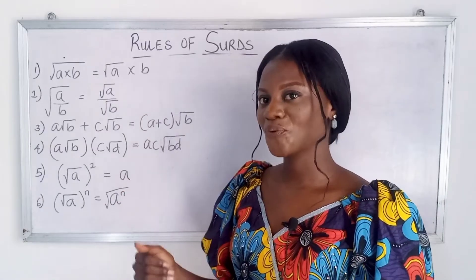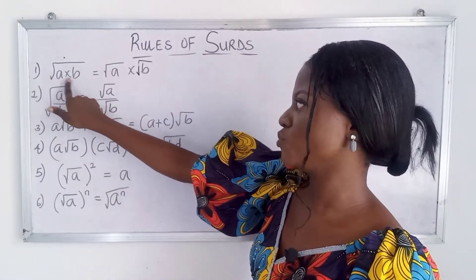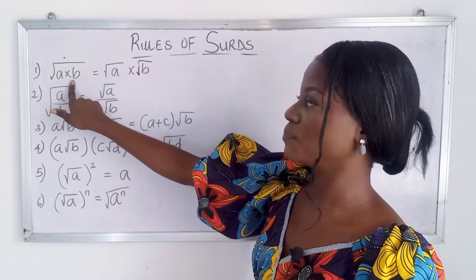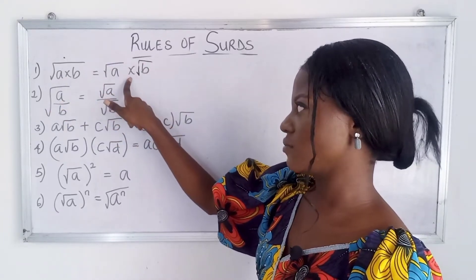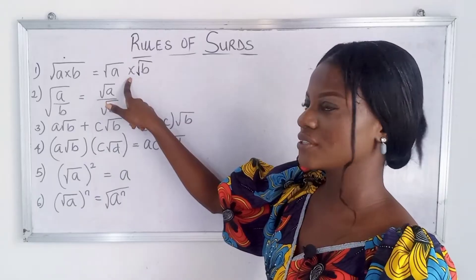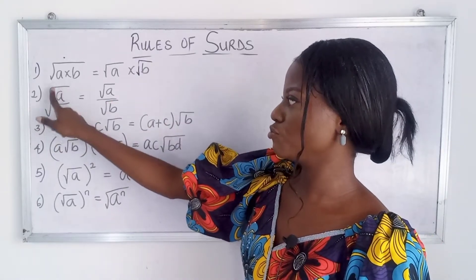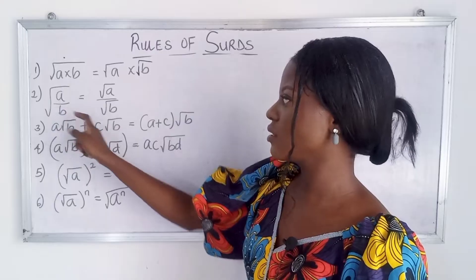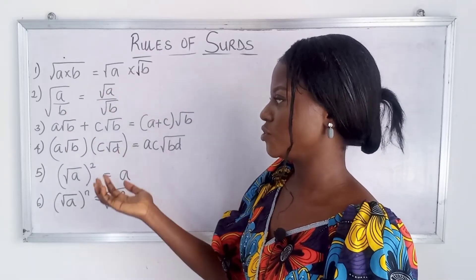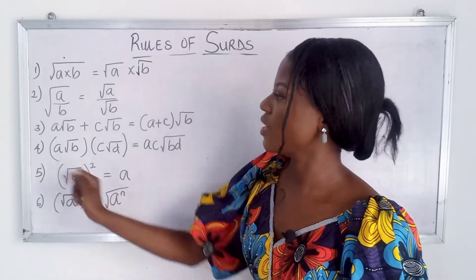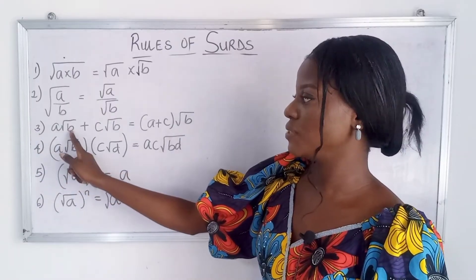When you have roots being multiplied together, you can just separate the roots and your multiplication still stands. The same goes for division — when the root covers the whole thing, you can separate the roots with the division sign.